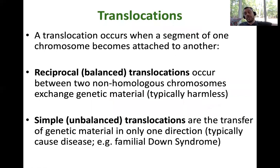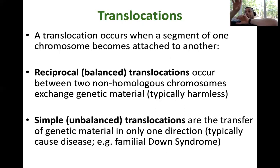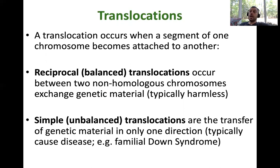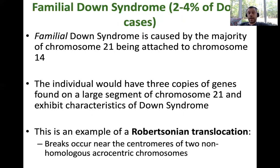Translocations are different from inversions in that one part of a chromosome breaks off and becomes translocated — it moves to a different chromosome. Translocations can happen in a couple of ways. The first is a balanced translocation where two chromosomes swap information completely. This is typically harmless because it's reciprocal — you're just swapping DNA between two chromosomes. Sometimes, however, you can get what is called a simple or unbalanced translocation where part of one chromosome breaks off and just attaches to another one. This can cause diseases such as familial Down's syndrome.